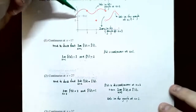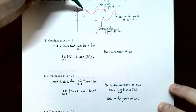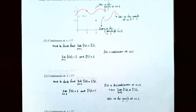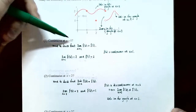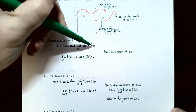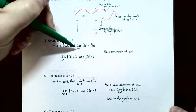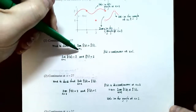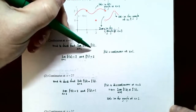Looking at the graph, the function appears continuous because I can draw through x equals one without lifting my pencil. But why does it satisfy the definition? We're checking whether the limit as x approaches one of f of x equals f of one. From the left side of x equals one, the y values are approaching two. On the right side, they're also approaching two. So the limit as x approaches one is two.